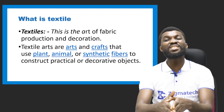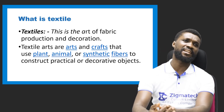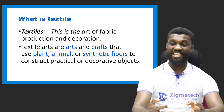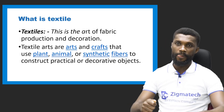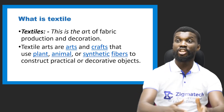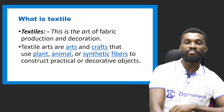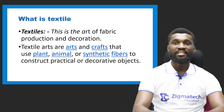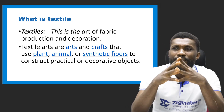Textile as an art uses plants, animal, or synthetic fibers to construct a practical or decorative object. Practical objects could be a cup engulfed with fabric, or a tool that incorporates fabric, or even your sofa — the chair has a textile base. It could be anything. This is an art and craft that uses plants, animal, or synthetic fiber to construct practical or decorative objects.